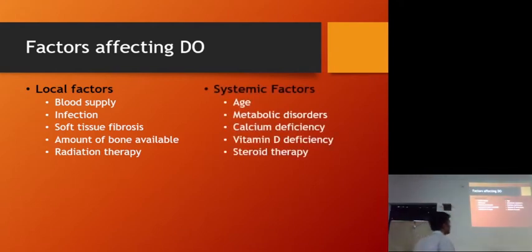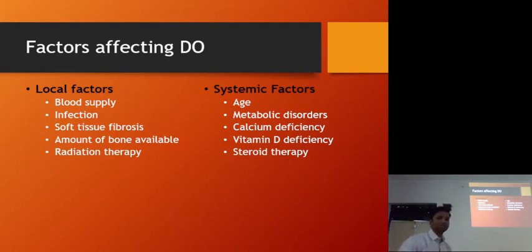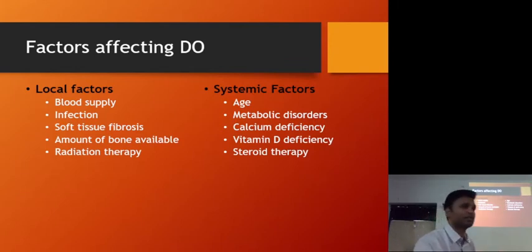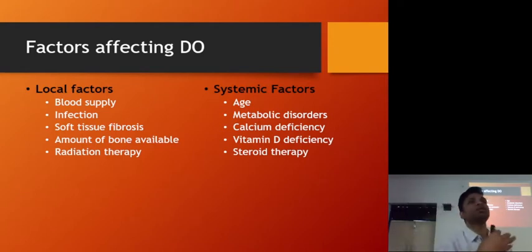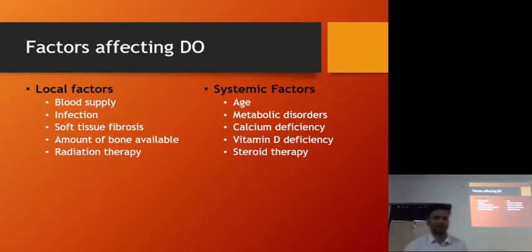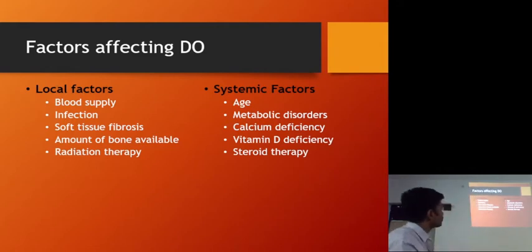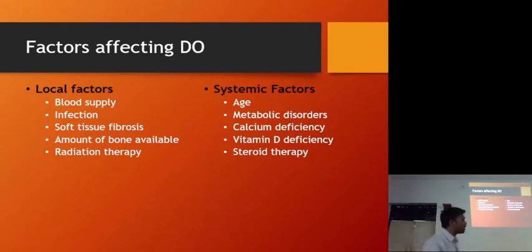Systemic factors include the age of the patient — in a young patient, bone healing is faster, so distraction osteogenesis has a higher chance of success compared to an older patient. Any metabolic disorder that hampers bone metabolism — such as osteoporosis, rickets, osteomalacia, or osteogenesis imperfecta — are all conditions that hamper bone healing, so we must be careful or avoid distraction osteogenesis in these patients.